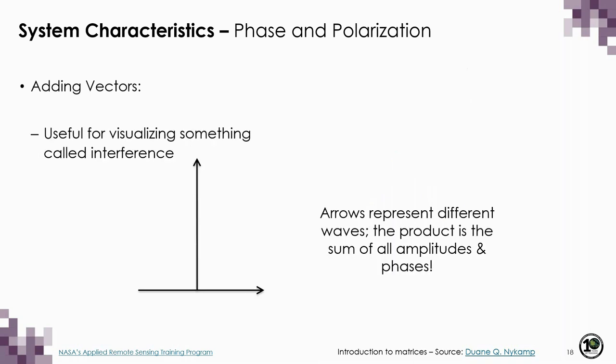Knowing how to add vectors is useful for visualizing interference — when waves occupy the same space or move simultaneously through the same medium. Depending on differences in their phase, we can have either constructive or destructive interference. Multiple different vectors, each representing a different wave occupying the same space at the same time, produce a result that is simply the sum of all their amplitudes and phases together, shown as the final vector in purple.